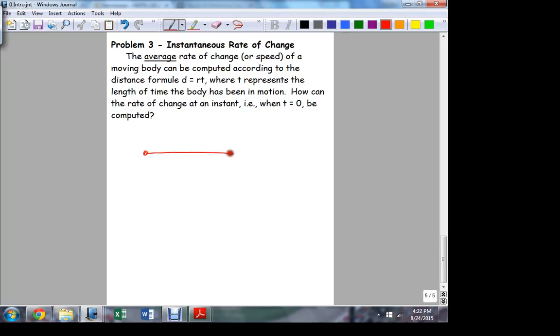Suppose I'm able to cover 100 miles in, I don't know, let's make it simple, in two hours. What's the average rate of change? How fast am I going on average across that interval? 50 miles an hour. Right. The rate of change is equal to distance divided by time. In this case, I'm able to cover 100 miles in two hours. So I'm moving at an average rate of 50 miles per hour. So this R here represents the average rate.